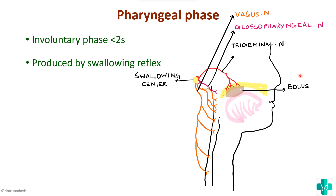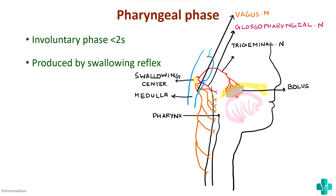The deglutition centre is present in the medulla or the lower pons. Once these impulses reach the swallowing centre, it produces different efferent impulses via different arcs, which include the trigeminal, vagus, and other nerves. Once these impulses return, they cause movement of the pharyngeal and tongue musculature — that is how swallowing takes place. The mechanoreceptors transmit impulses via the trigeminal, glossopharyngeal, and vagus nerves, which stimulate the swallowing centre, which then sends impulses back to the pharynx and tongue via those same nerves.